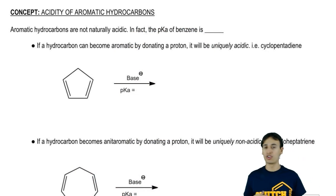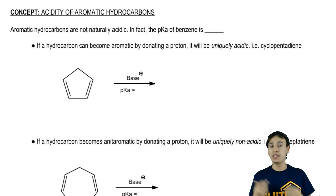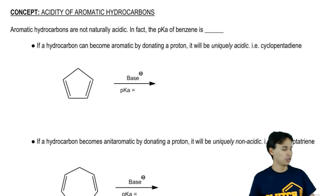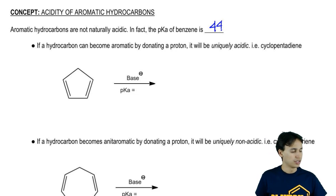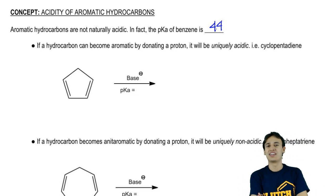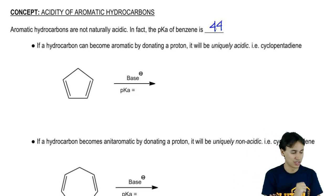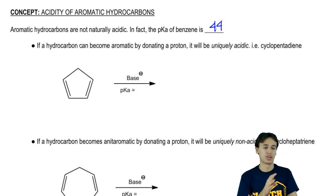As I said, aromatic compounds are not naturally acidic. The pKa of benzene, which is your most common aromatic molecule, is 44. Is that a good pKa? No, it's actually one of the worst acids possible. So it's obviously not going to be a great proton donor.